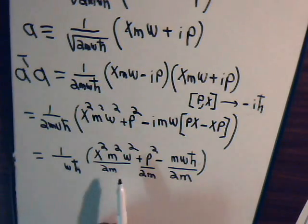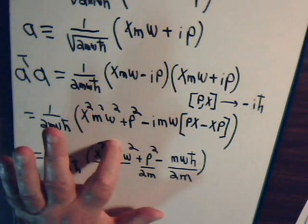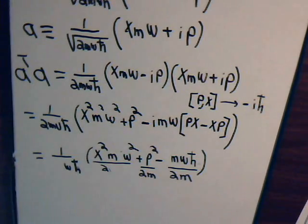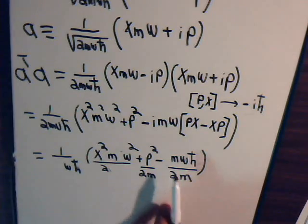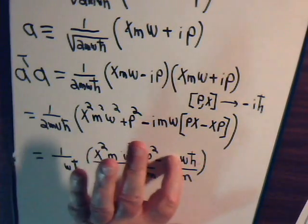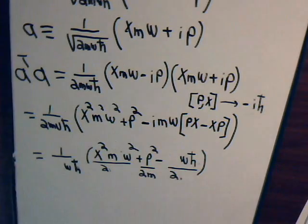So, this is equal to 1 over omega h bar. And we have times this. Now, here, these are going to cancel. So, this will give us just m. And here, and over here, these m's are going to cancel. So, these go away. So, we have this expression.